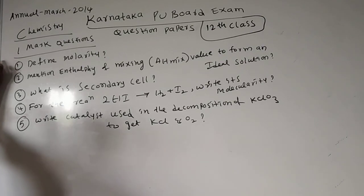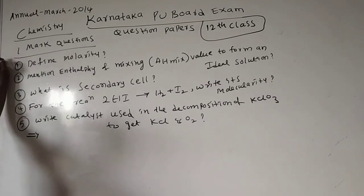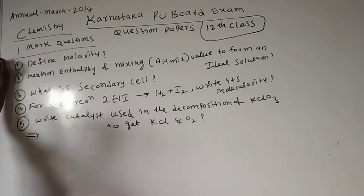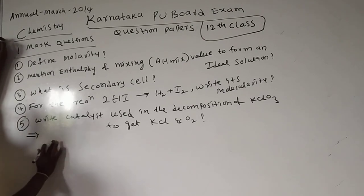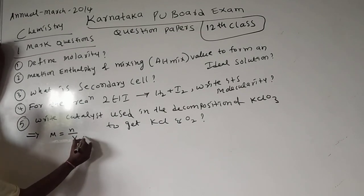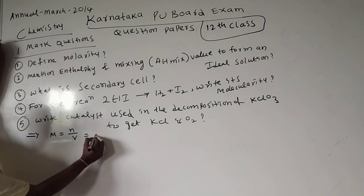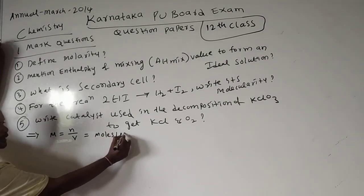See here, I wrote some questions — five questions. First: Define molarity. The number of moles of a solute present in one liter of solution, we call as molarity. The symbol for molarity is M. The formula is M = N/V, where N is the number of moles and V is the volume. The units for molarity are moles per liter.